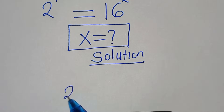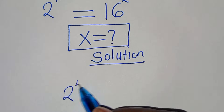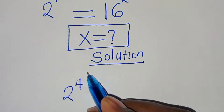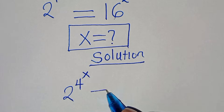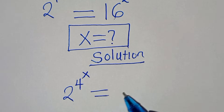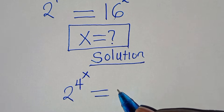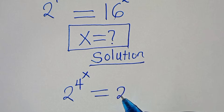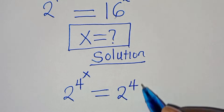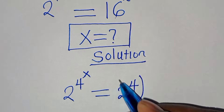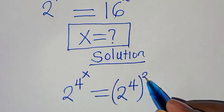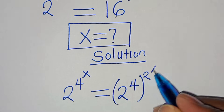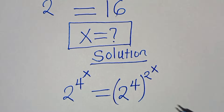We have 2 to the power of 4 raised to the power of x, this is equal to 16, which you can express as 2 to the power of 4, raised to the power of 2 raised to the power of x.